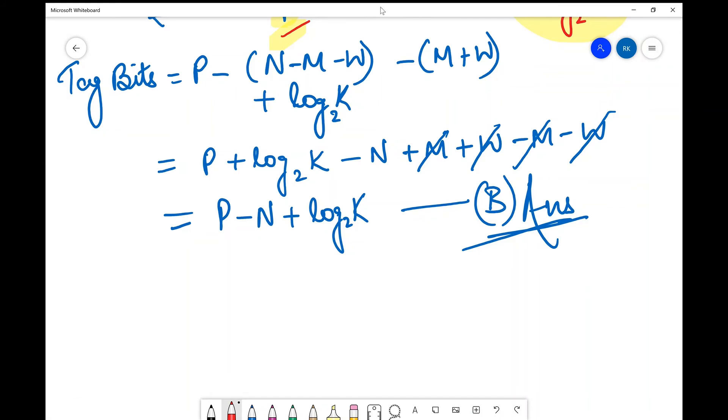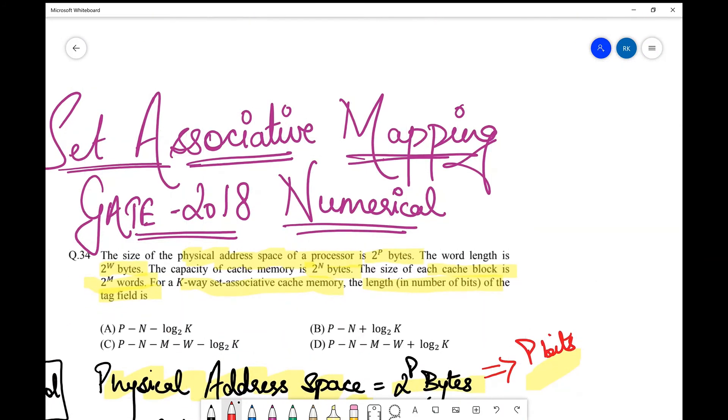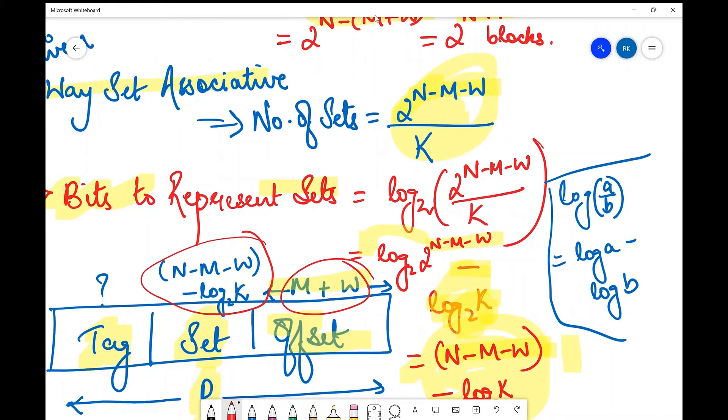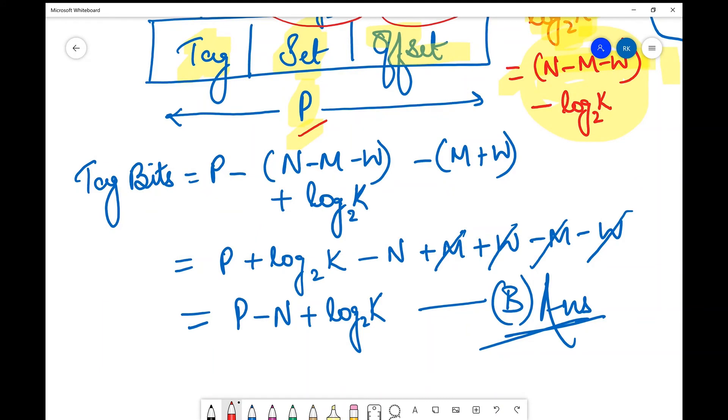The option is p-n+log₂k. I'll just project it if you want to see the simplifications. So yes, that's all for this current video.